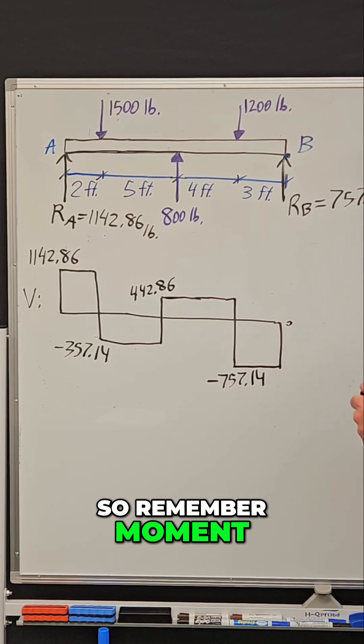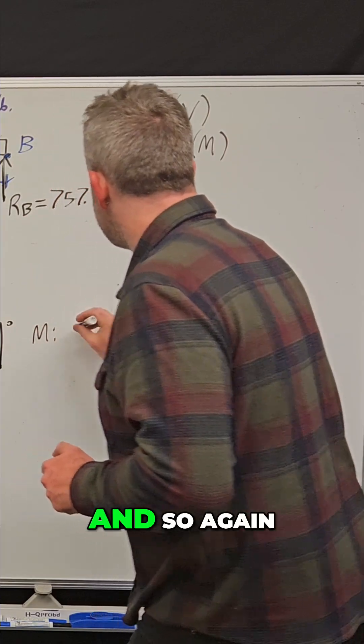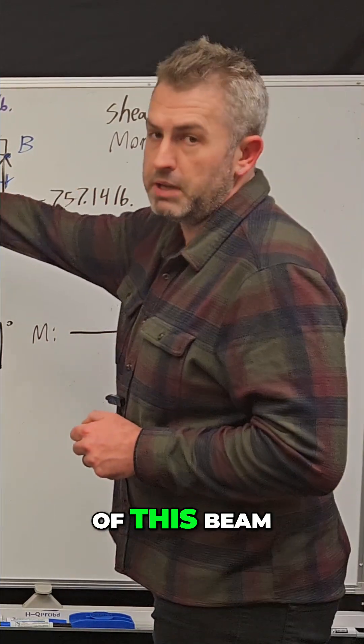So remember moment, we use the symbol M for moment. So that's going to be a capital M. And so again, to create an M diagram, I'm just going to make a nice long line to represent the length of this beam.